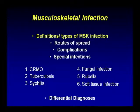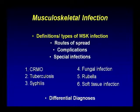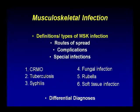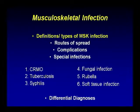My talk is structured into five parts. I'll first discuss definitions and types of musculoskeletal infection, then routes of spread, complications, and special infections — which include chronic recurrent multifocal osteomyelitis, tuberculosis, syphilis, fungal infection, rubella, and soft tissue infections. Finally, we'll go over important differential diagnoses of infections.